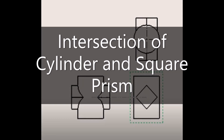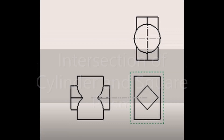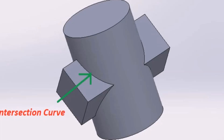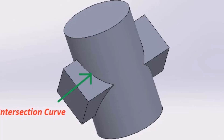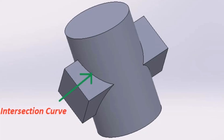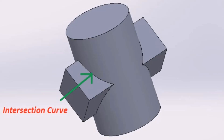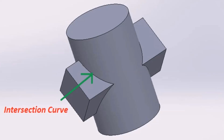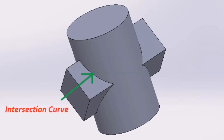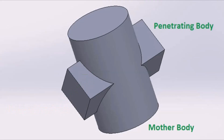Today we will learn about the intersection of solids. Whenever two or more solids combine, a definite curve is seen at their intersection. This curve is called the curve of intersection.